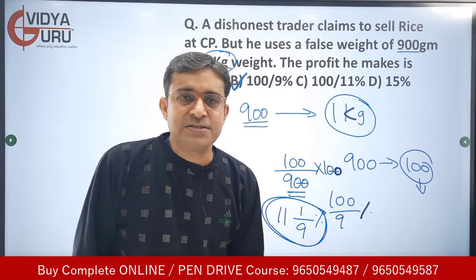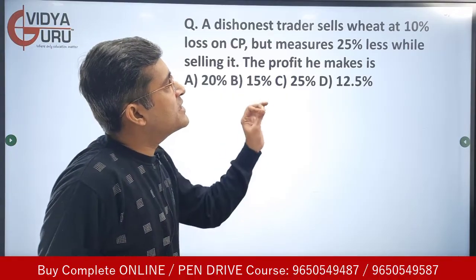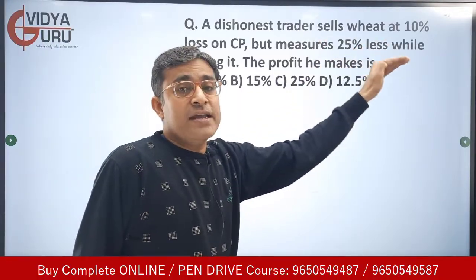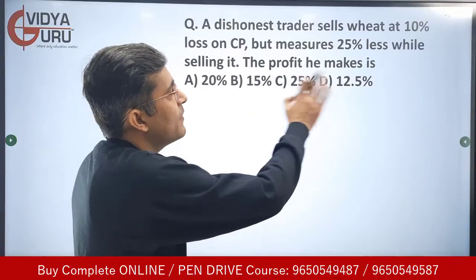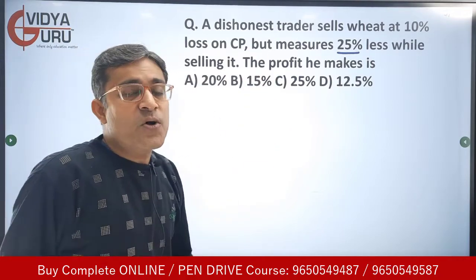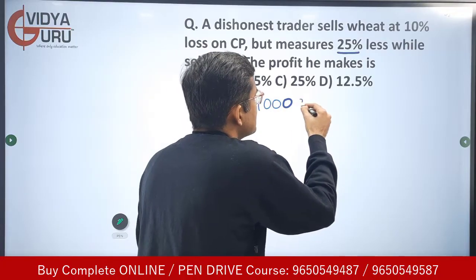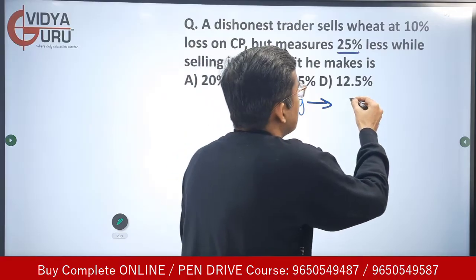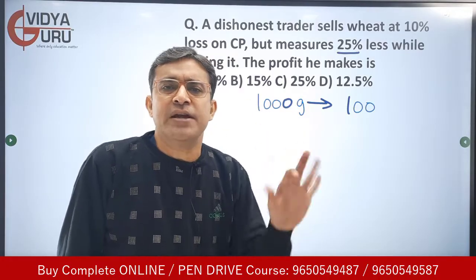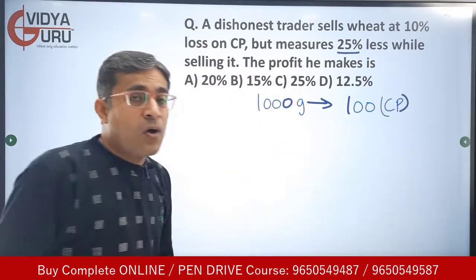Now the last question: a dishonest trader sells wheat at 10% loss on cost price, but measures 25% less while selling. Find the profit he makes. Let's say 1 kg is 1000 grams and the cost price of 1 kg wheat is rupees 100.